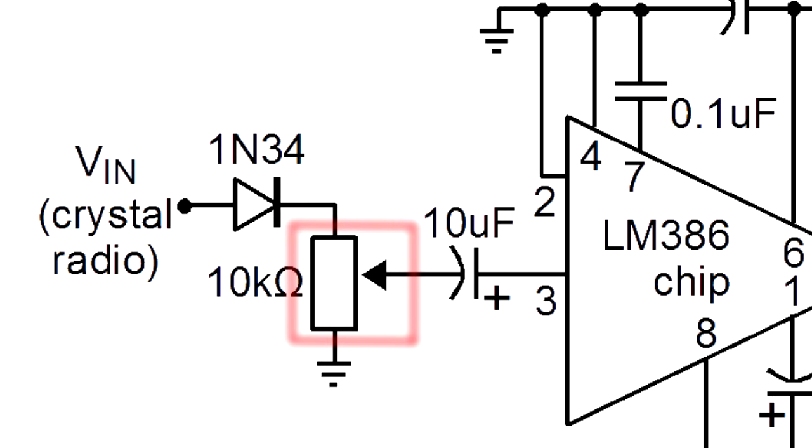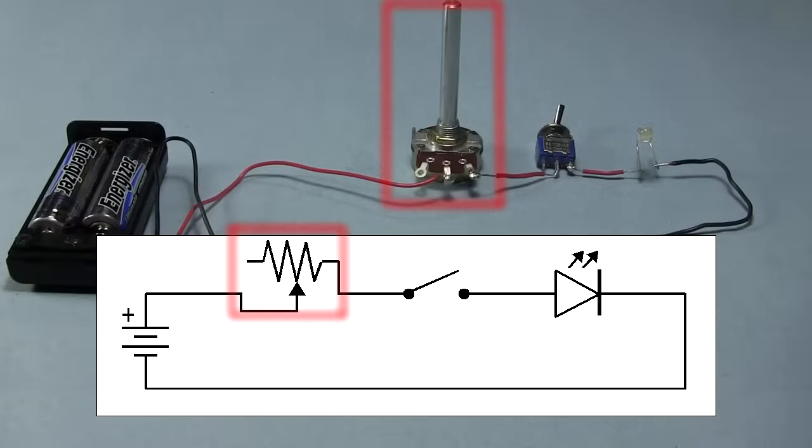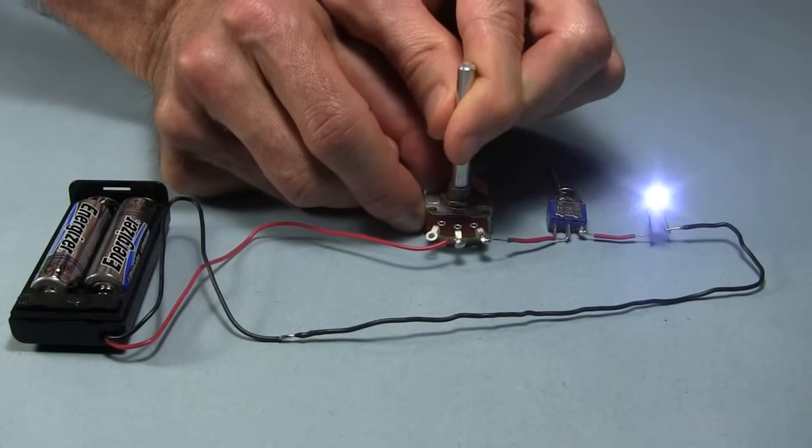We can replace the fixed value resistor on our simple circuit with a potentiometer. Since we're replacing just one resistor, we connect to the middle and one of the ends and leave the other end unconnected. That allows us to adjust the brightness of the light.